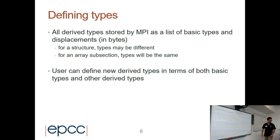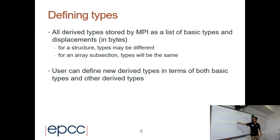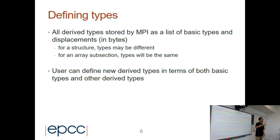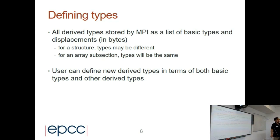If we have a structure, the elements can be of different basic types. But if we define an array, all elements in the array should be of the same data type. Also, once we define a data type, we can reuse it — for example, define a vector of four integers, and then reuse this new data type to create a structure, because once a data type is defined we can work with it as a basic one.